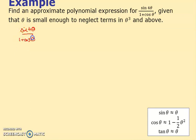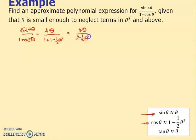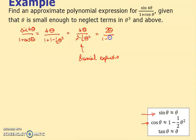For the approximate polynomial expression for sine(4θ) over one plus cos(θ), ignoring theta cubed terms: sine(4θ) is approximately 4θ. One plus cos(θ) is one plus one minus one half theta squared, which gives two minus one half theta squared. So the expression is 4θ over two minus one half theta squared. Dividing top and bottom by two gives 2θ over one minus one quarter theta squared.